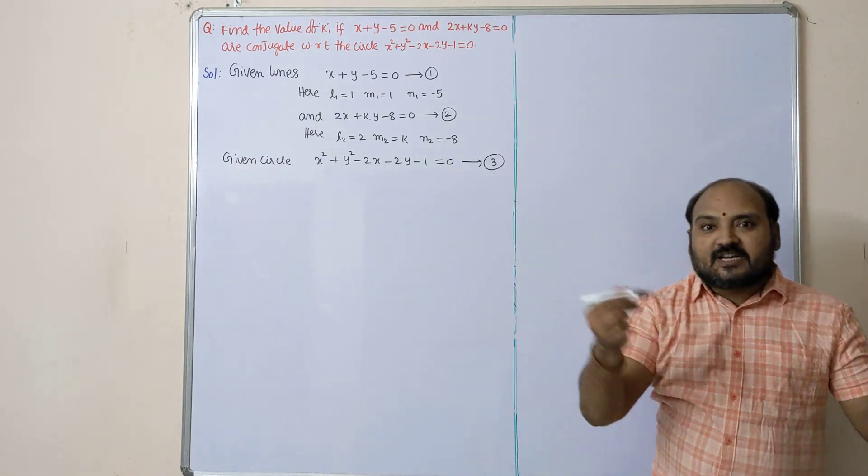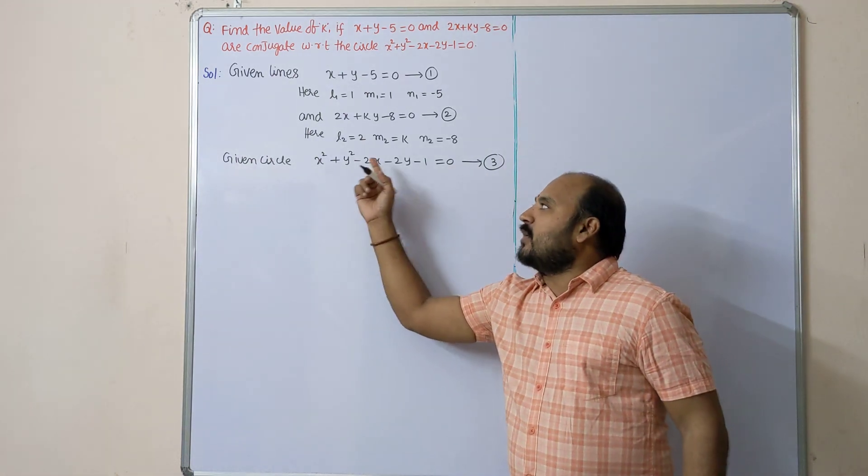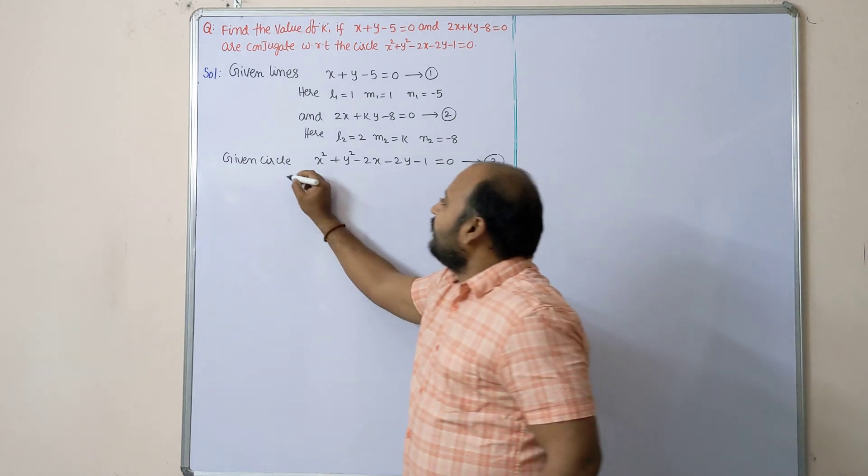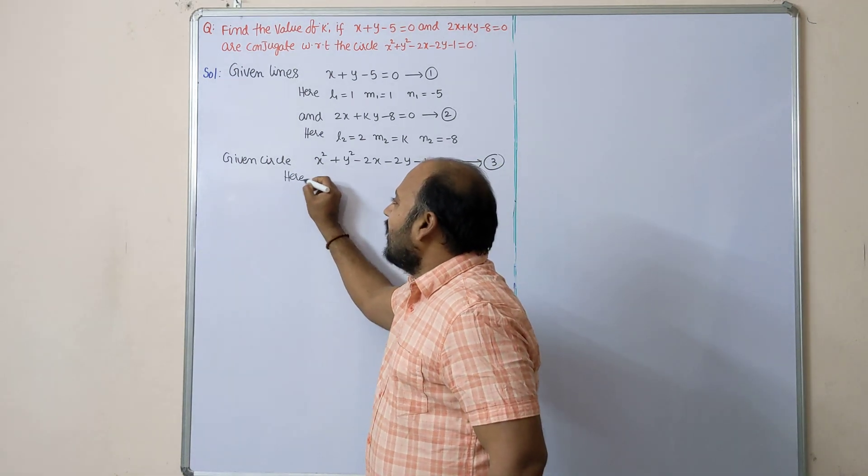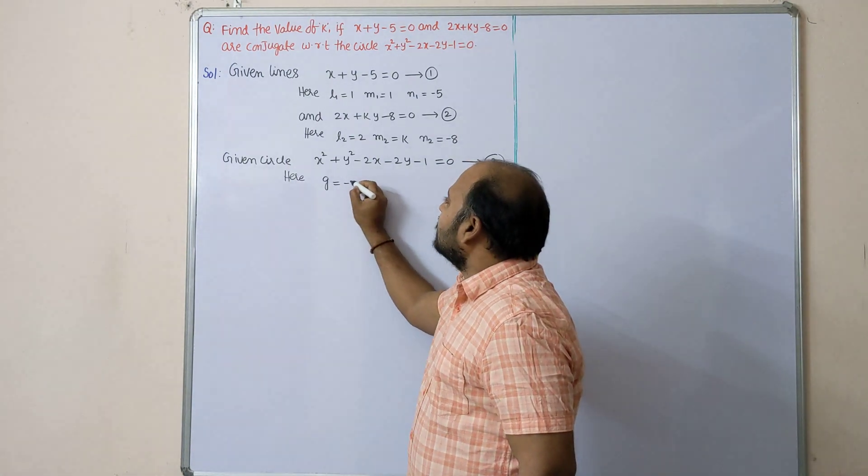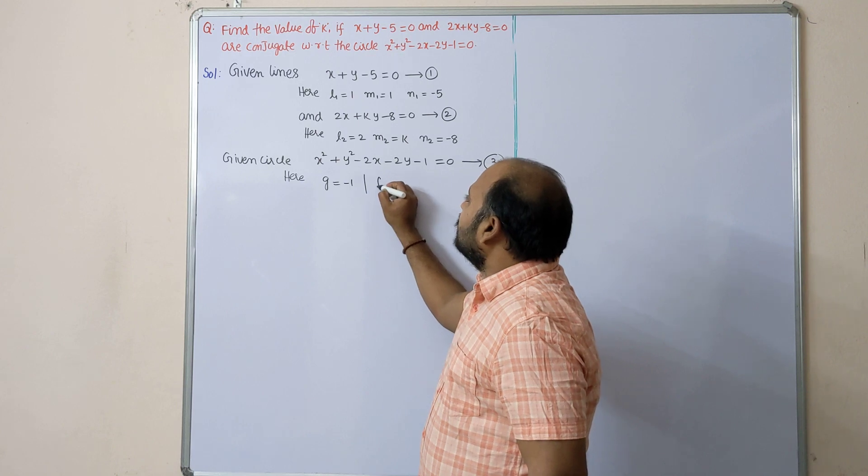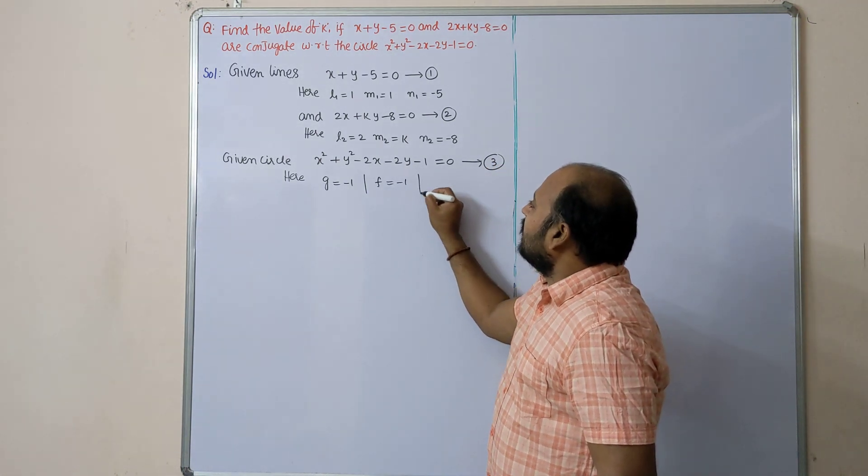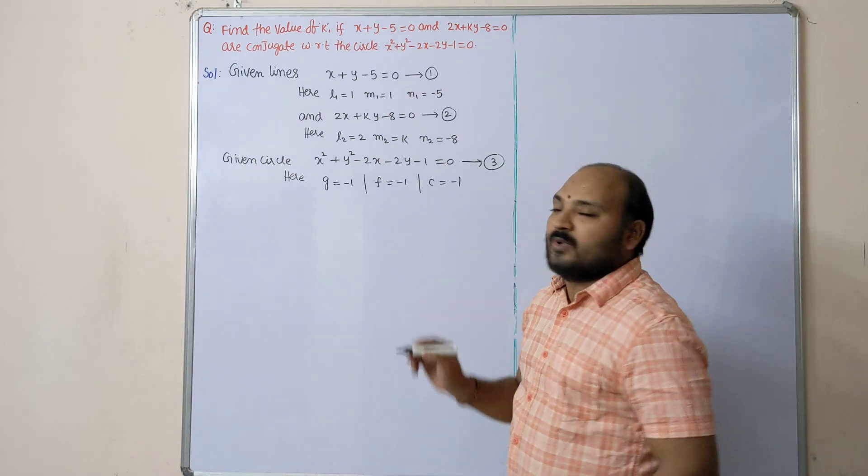This you have to compare with general equation of circle: x² + y² + 2gx + 2fy + c = 0. Here directly you write the values of g, f, c. Otherwise 2g = -2, g = -1, and 2f = -2, f = -1, and c = -1. We got it.